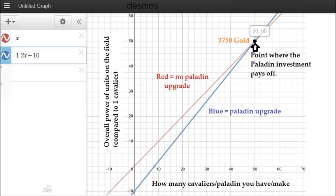I hope that made sense. You can take a look at that graph, maybe pause the video and think about it for a little bit. I'm quite confident in those numbers as long as we can agree that the Paladin represents a 20% improvement over the Cavalier.